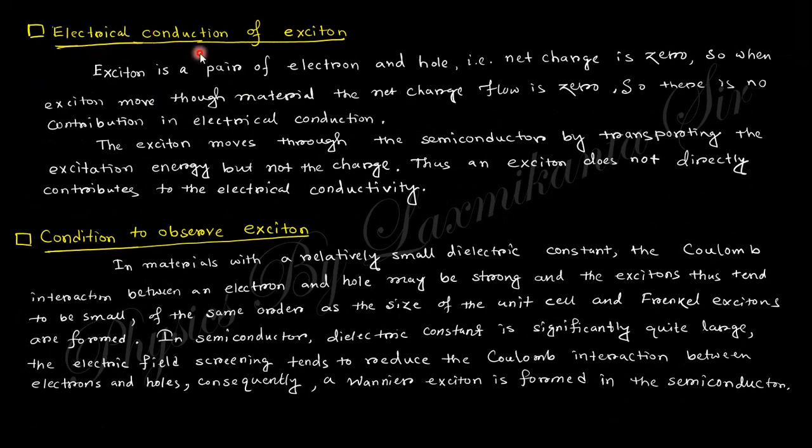The electrical conduction of exciton is zero because the total charge of exciton is zero - there is electron and hole, so total charge is zero. When a total charge zero particle moves, the conduction current will be zero because current means charge flow within a unit area. But here the total charge is zero, that's why the conductivity for the exciton is also zero.